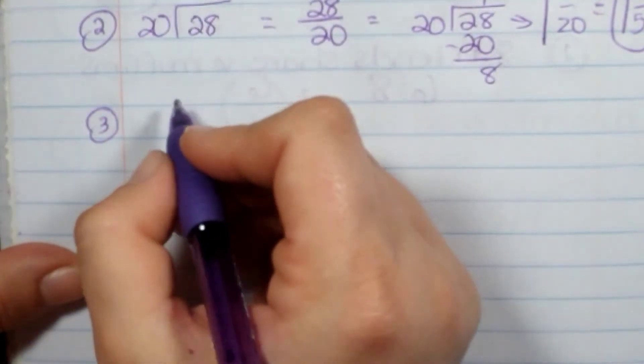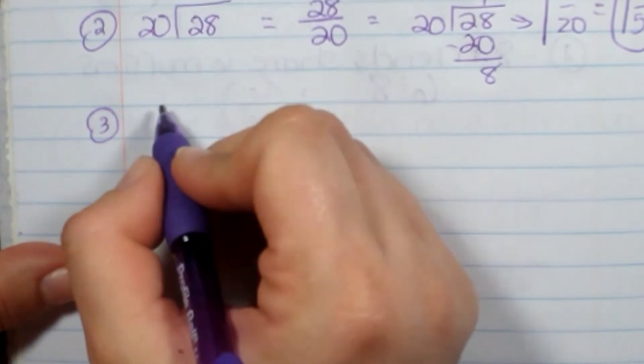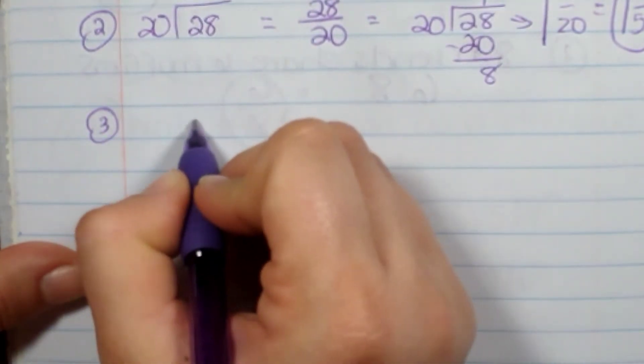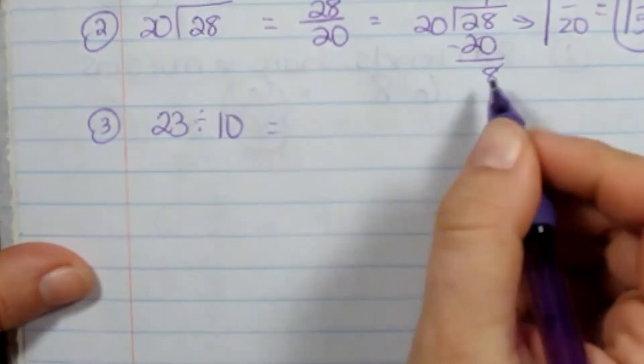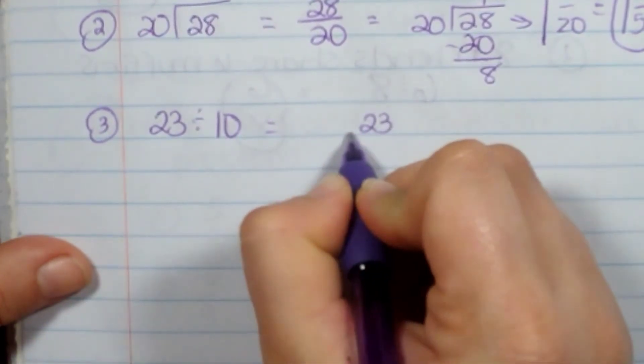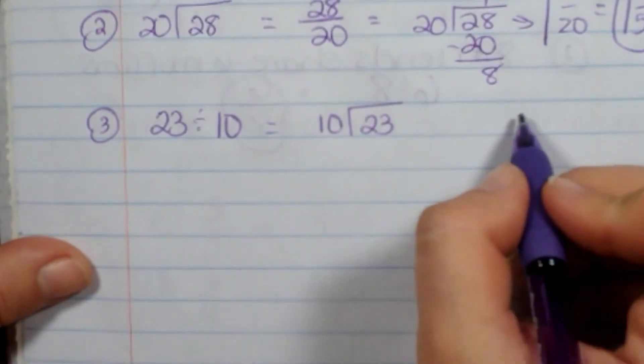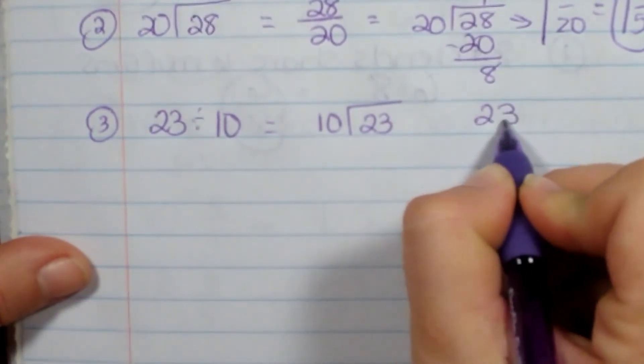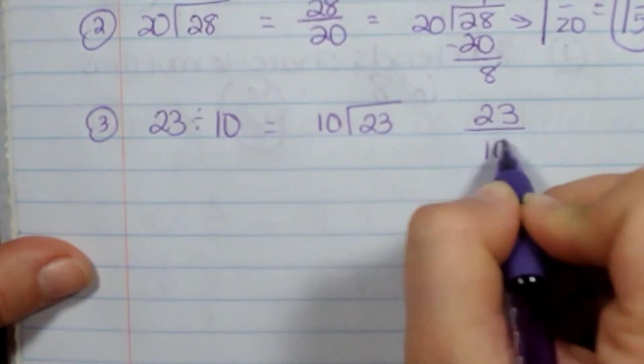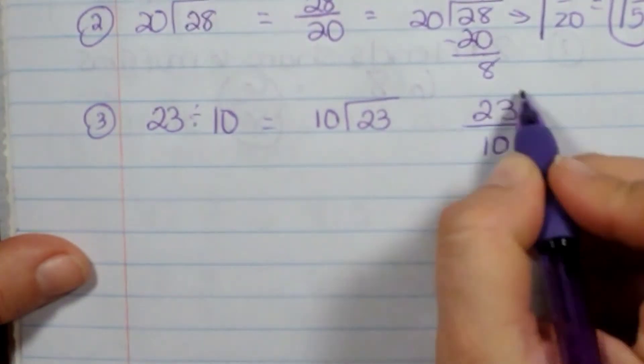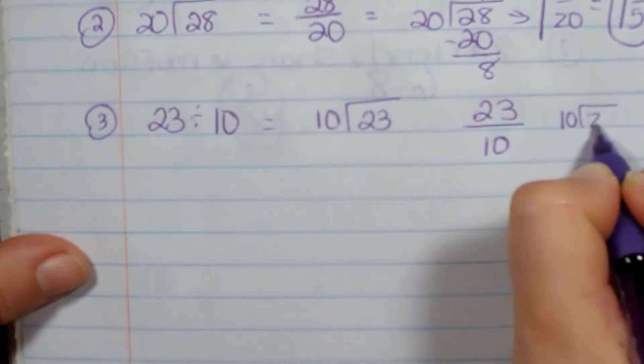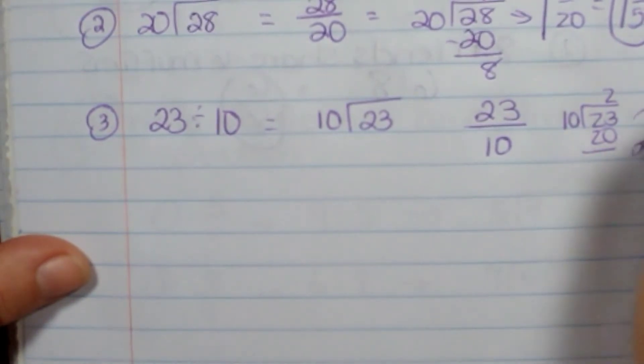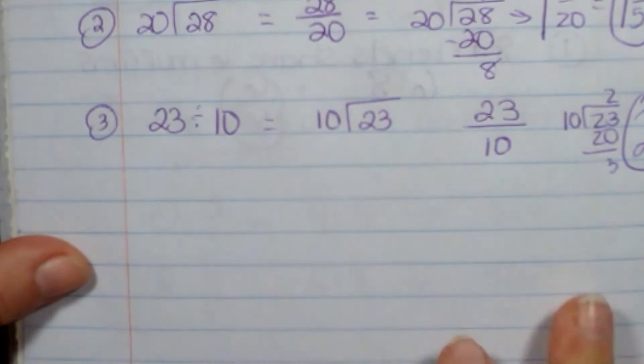My next one: let's do two more. 23 divided by 10. I would write it like this: 23/10. So I want to take this and make it into a mixed number. This would be 2 and 3/10, which would be my answer.